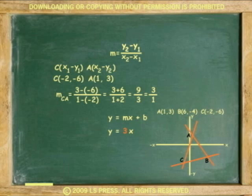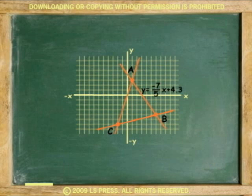There is no value for b. The equations for the three lines that form triangle ABC are y equals negative 7 over 5 x plus 4.3, y equals 1 over 4 x minus 5.5, and y equals 3x.